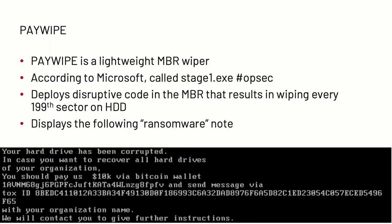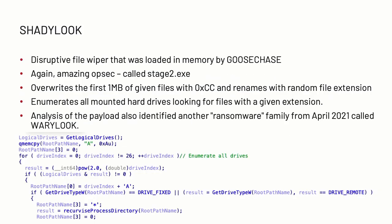So let's discuss Paywipe - a very basic MBR wiper slash disk wiper. The actors had awesome OPSEC with Stage1.exe - very stealthy. All it did was open a handle to the hard drive and overwrite the MBR. When the victim rebooted, the MBR code would wipe every 199th sector on the hard drive, displaying a fake ransomware note saying 'pay me $10,000 or you don't get your data back' - which wouldn't have worked anyway. Stage2.exe was loaded in memory by Goosechase, and all it did was overwrite the first megabyte of every file with a target extension list, then rename the file with a random extension.